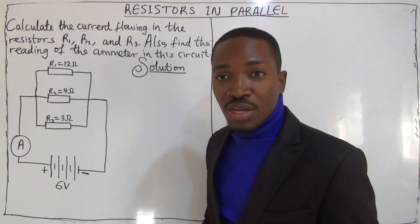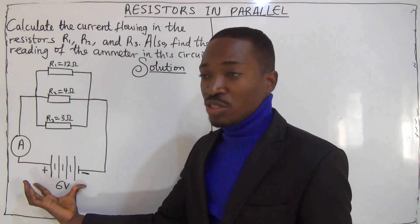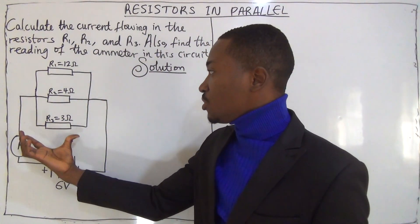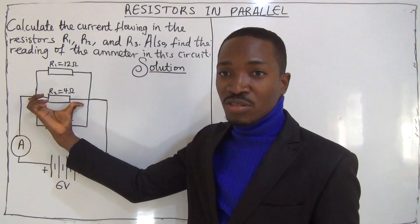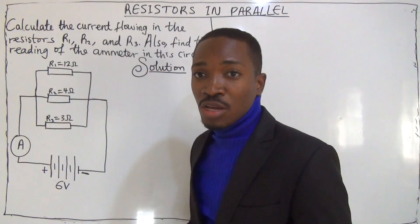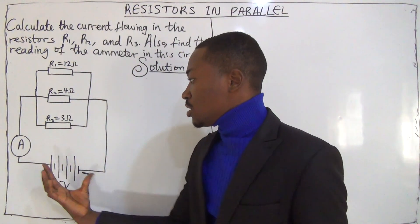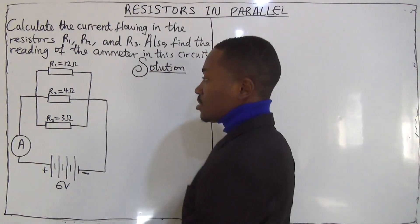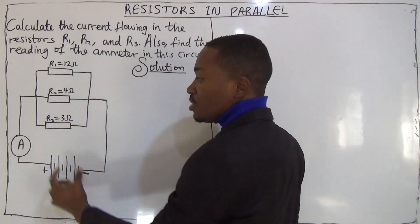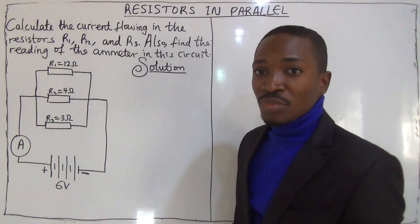Take note that when resistors are connected in parallel, the voltage here — which is the EMF — will be the voltage across each resistor. That same voltage exists across the second and first resistors. This simply means if the EMF is 6 volts, then the voltage across R3 is 6 volts, across R2 is 6 volts, and across R1 is 6 volts.